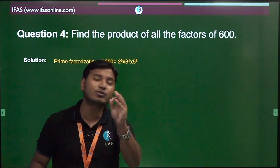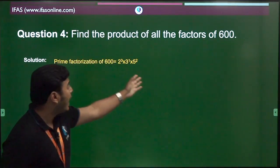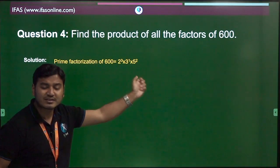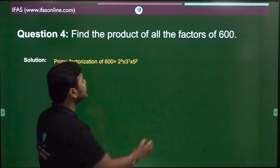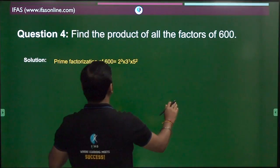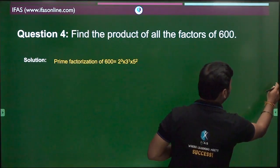Nothing is easier than this. You will prime factorize 600, which is a very easy thing to do. 600 you can write as 6 multiplied by 100.